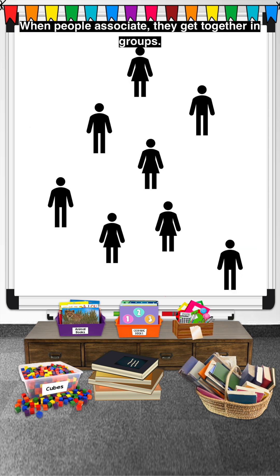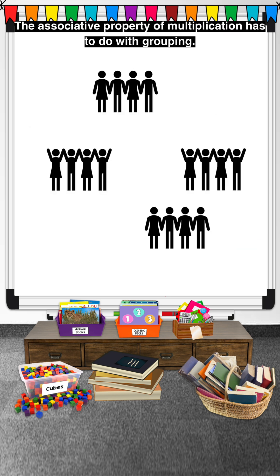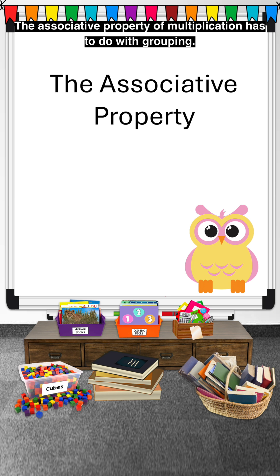When people associate, they get together in groups. The associative property of multiplication has to do with grouping.